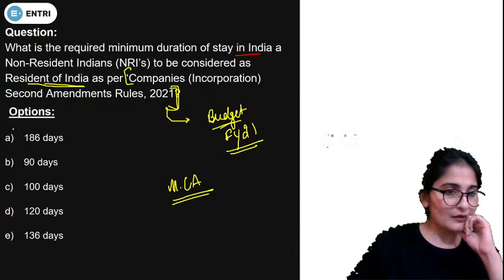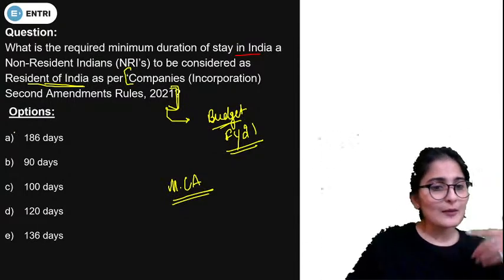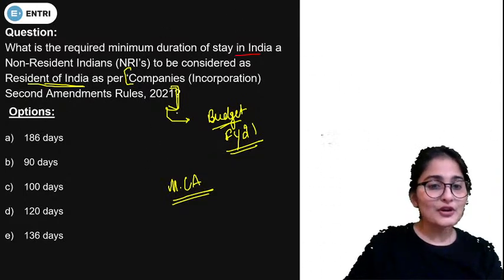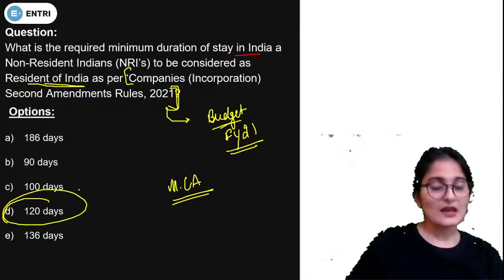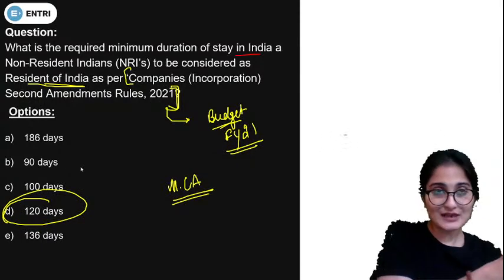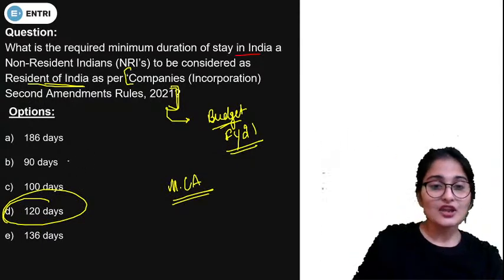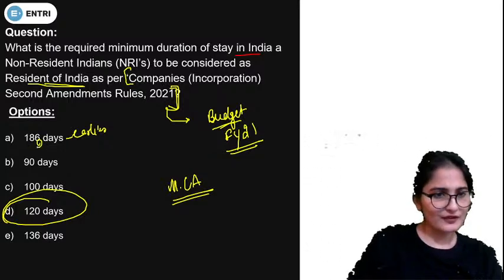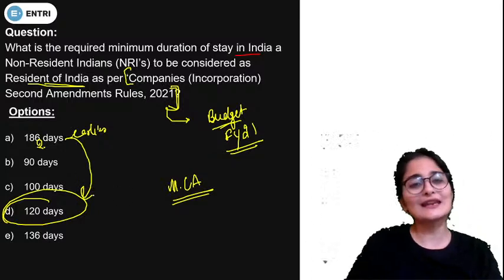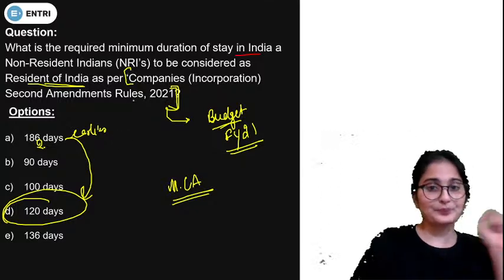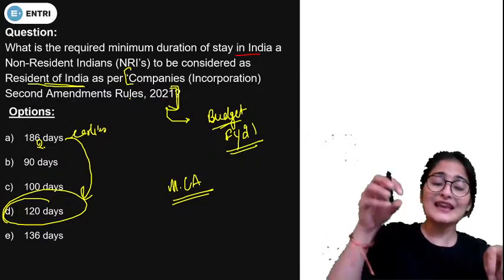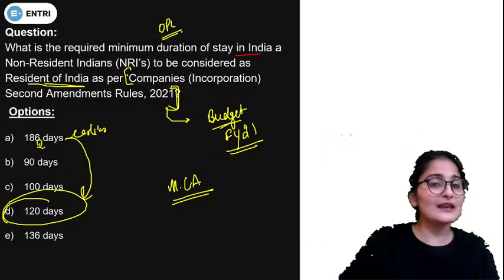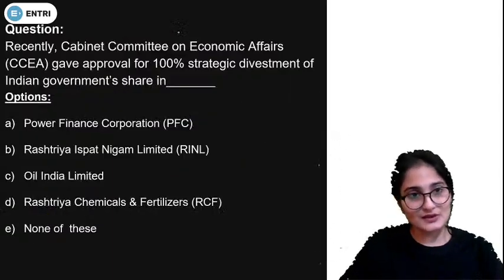The answer: the number of days has been reduced to 120 days. Earlier it was 182 days — 182 was the initial number of days and it has been reduced to 120 days. This is going to help NRIs set up startups in India. Once they live for 120 days, they can set up their own company or one-person company in India. Earlier they were required to stay for 182 days.